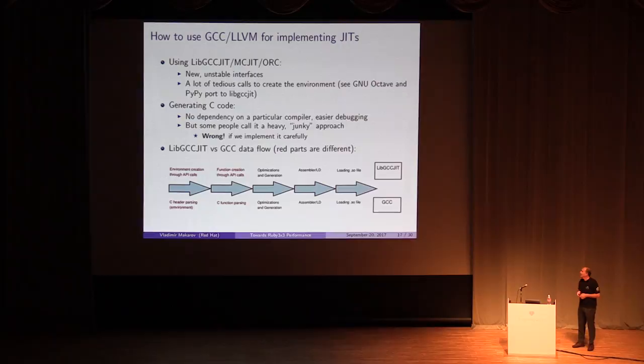So I hope I convinced you to use GCC LLVM for JIT implementation in MRI. Still, there are a few ways to do this. A popular approach is to use their JIT frameworks: LibGCCJIT for GCC and MCJIT or ORC for LLVM. But we could be more simpler and just generate C code for GCC and Clang. Here, I consider LibGCCJIT for comparison of both approaches because I know it better. It was implemented by our tools group member David Malcolm.